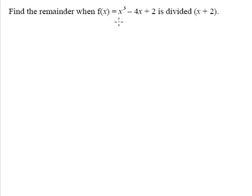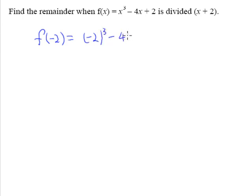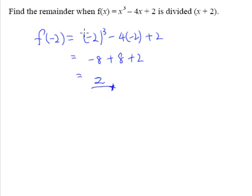Find the remainder when f(x) = x³ − 4x + 2 is divided by (x + 2). According to the remainder theorem, when f(x) is divided by (x + 2), all we have to do is substitute x = negative 2. So f(−2) = (−2)³ − 4(−2) + 2 = negative 8 + 8 + 2, which gives us positive 2. The remainder when f(x) is divided by (x + 2) is 2 — no long division needed.